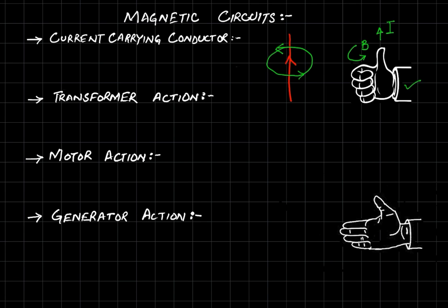We can represent our magnetic field with magnetic field density or flux, and sometimes it is also represented by H, which is a vector quantity called magnetic field intensity. Later on we will discuss these quantities in detail.